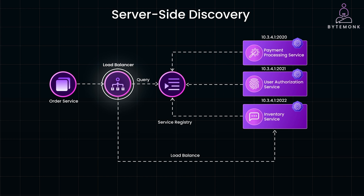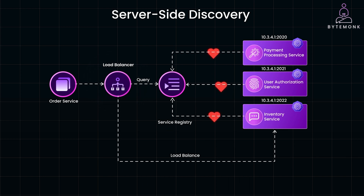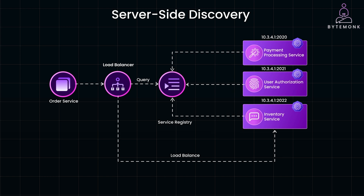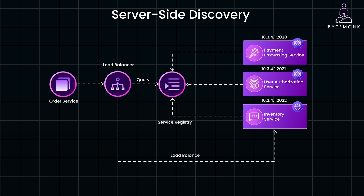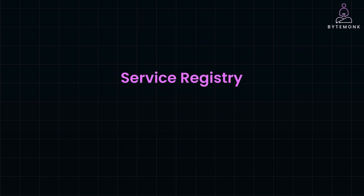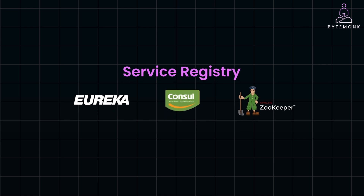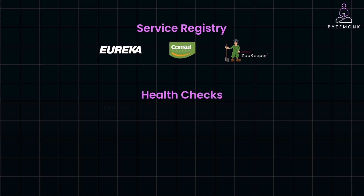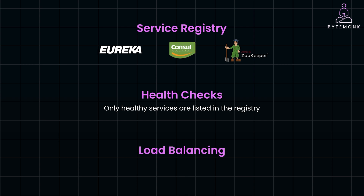The registry tracks availability of services using a heartbeat mechanism. To make service discovery work, a few critical components are involved. The service registry is the database that keeps track of which services are running and their locations — for example, Eureka, Consul, or Zookeeper. Health checks ensure that only healthy services are listed in the registry; if a service goes down, it's removed from the registry until it's back online. And finally, load balancing — whether client-side or server-side — ensures requests are distributed evenly among available service instances.